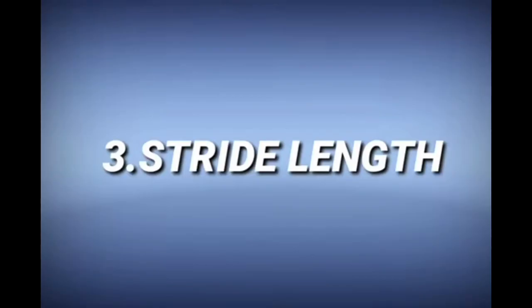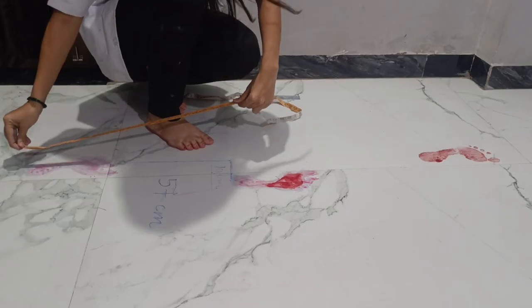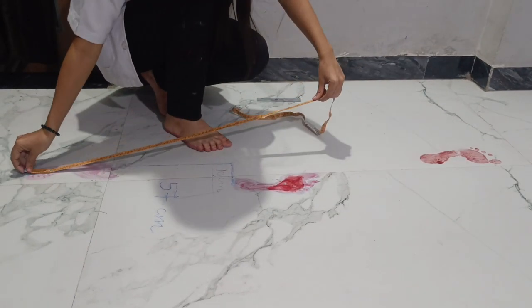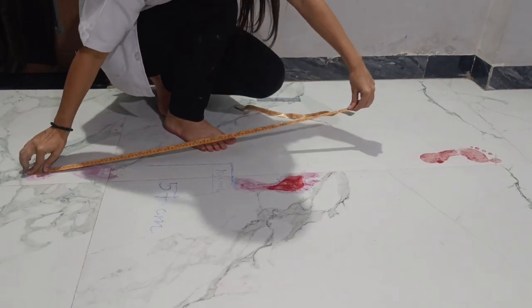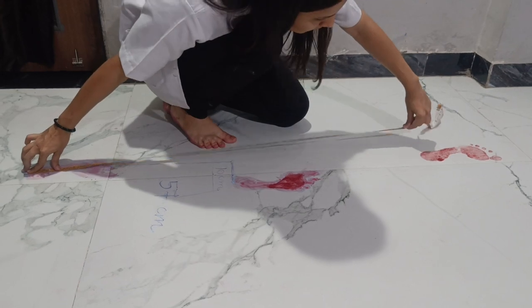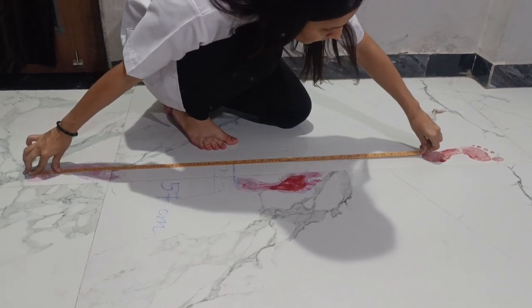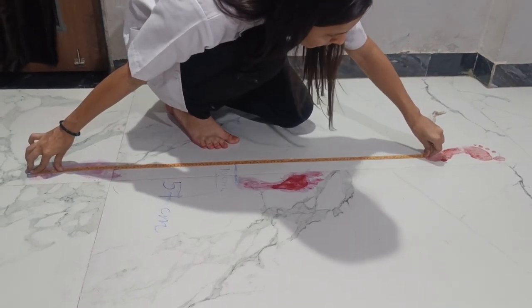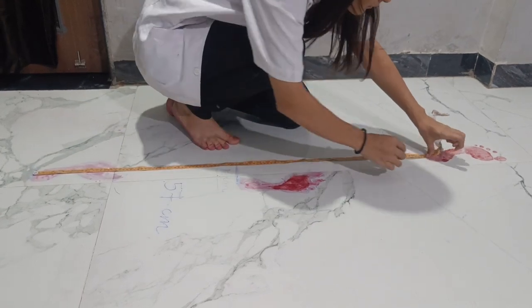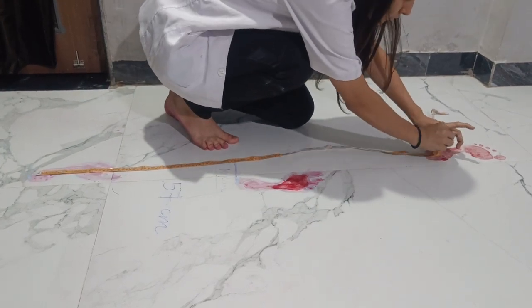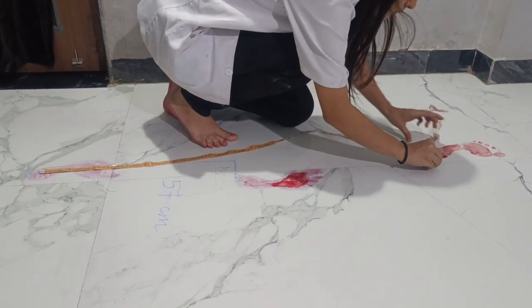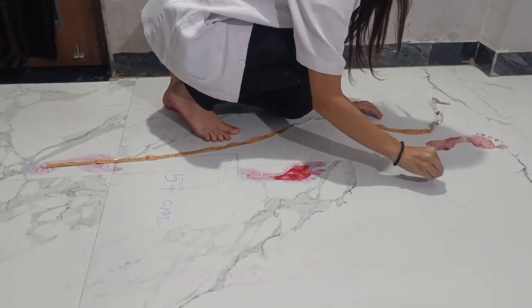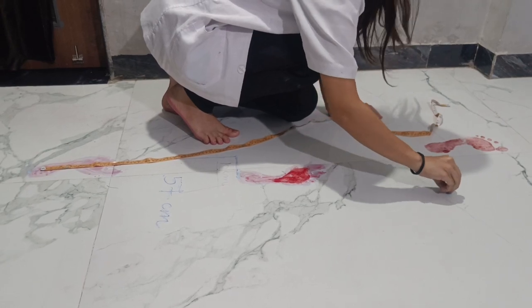The third variable is stride length, which is the distance between the heel strike of the same extremity. The normal range is 88 to 140 cm.